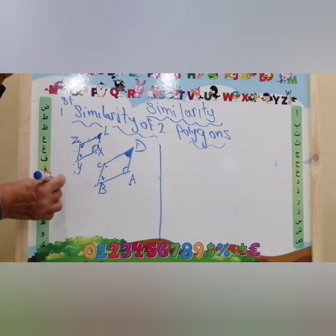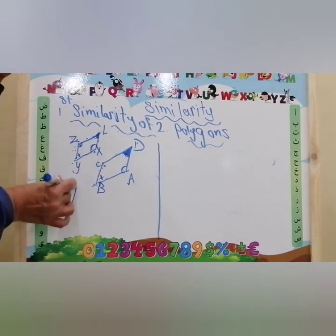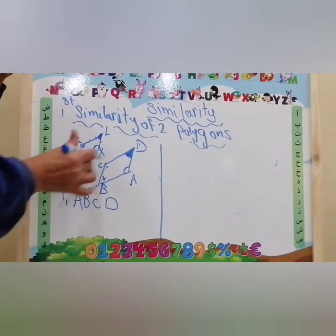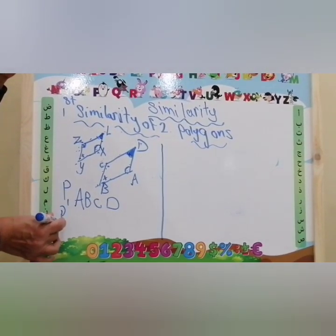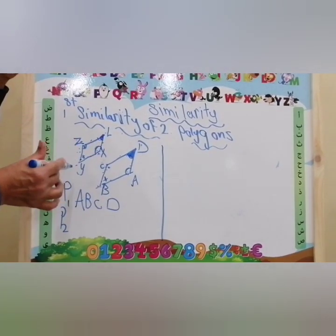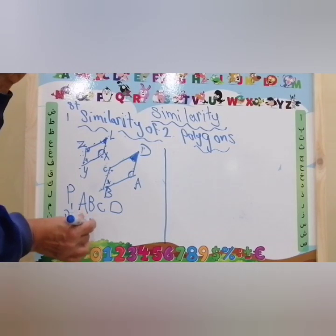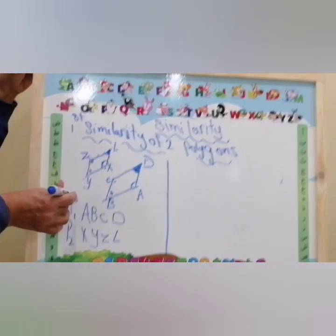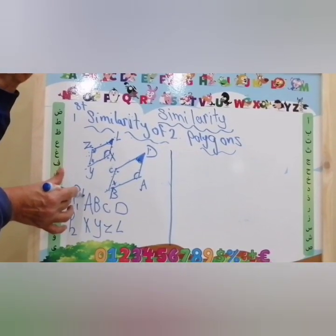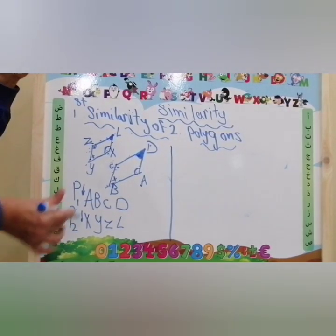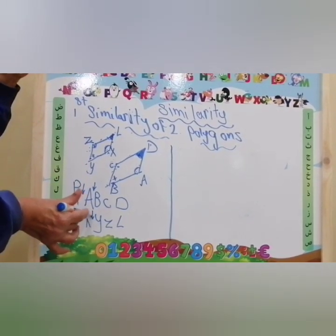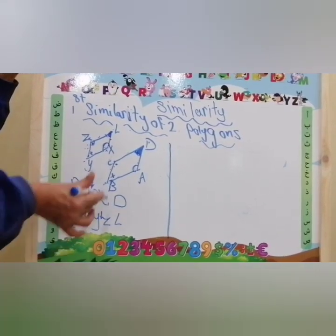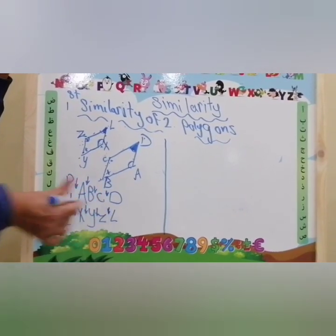Polygon 1 has vertices A, B, C, D. Polygon 2 has vertices X, Y, Z, L. Corresponding angles means: measure angle A equals measure angle X, measure angle B equals measure angle Y, measure angle C equals measure angle Z, measure angle D equals measure angle L.